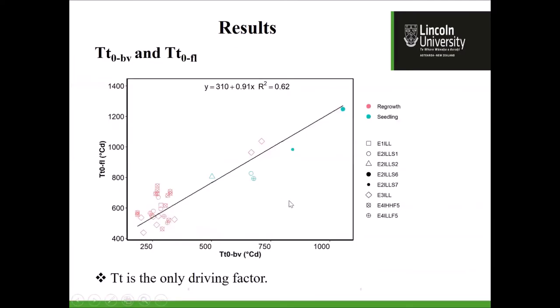A question was raised about whether water stress would also be a driving factor for development. All the experiments are under irrigated conditions. Derek explained that without irrigation the canopy heats up, so thermal time accumulation actually gets higher compared to irrigated conditions — temperature is still the driving factor. When the canopy is photosynthesizing, it can be five to eight degrees lower than the air temperature; once stomata close, it can be five to eight degrees warmer. Mild water stress changes the rate of development not by a direct stress signal, but because we are measuring the wrong temperature — air temperature instead of canopy temperature. This was illustrated by an experiment where irrigated and dryland lucerne next to each other showed up to three weeks' difference in flowering time.